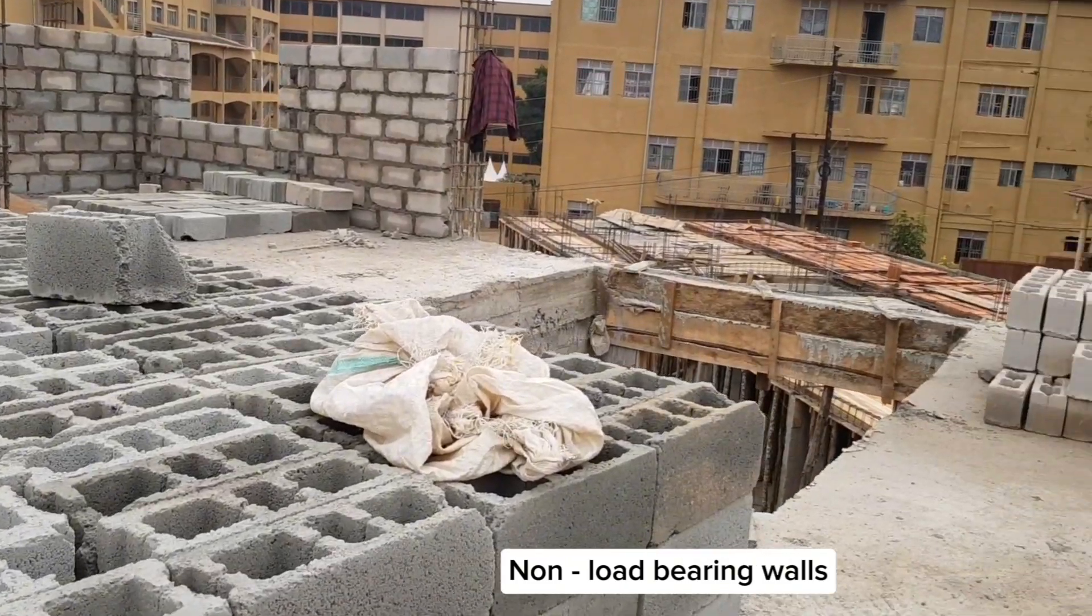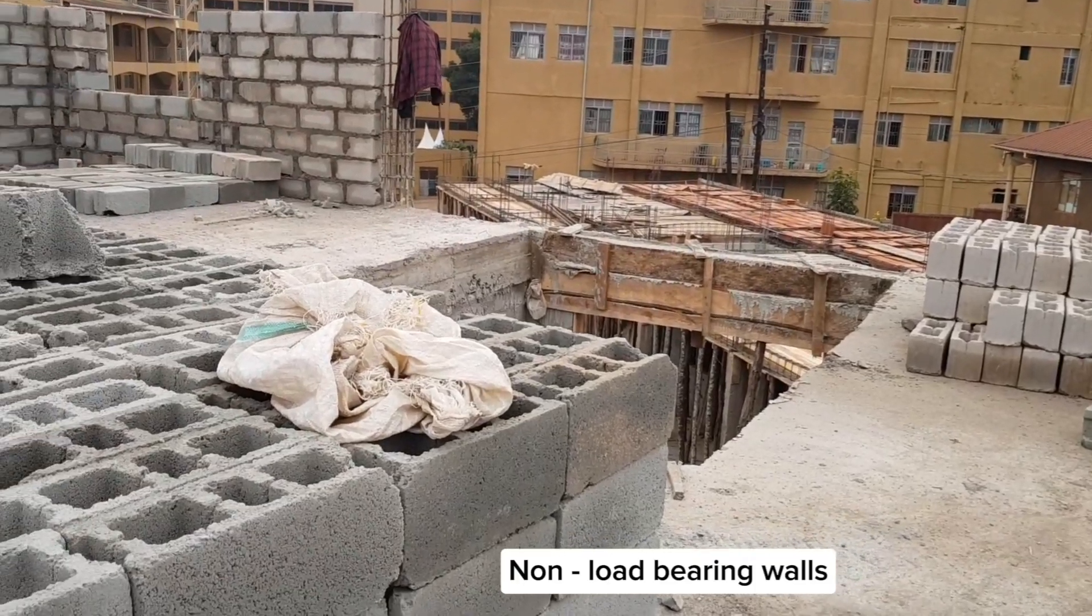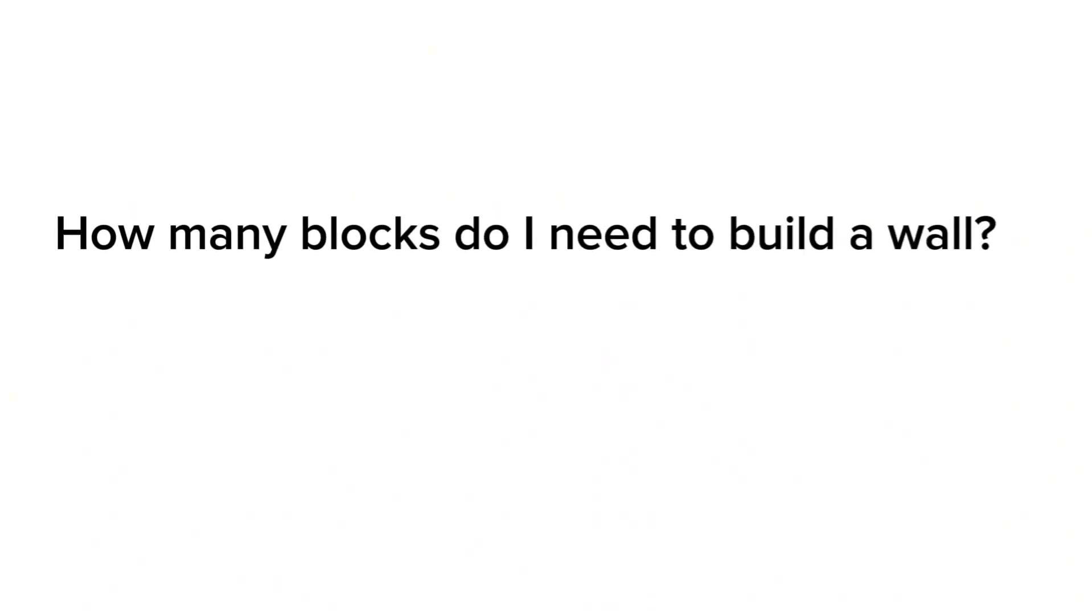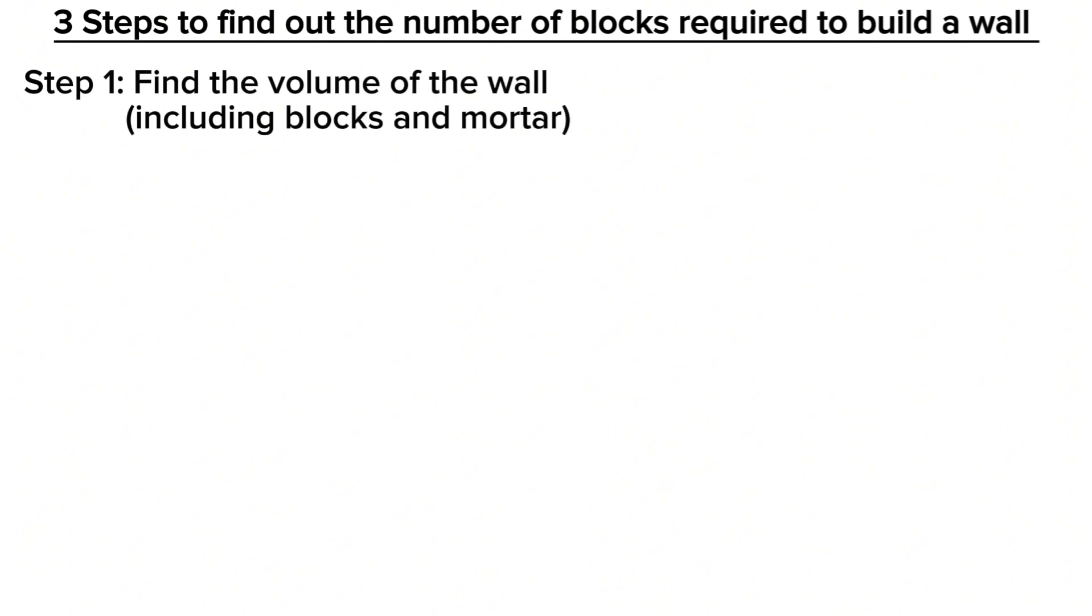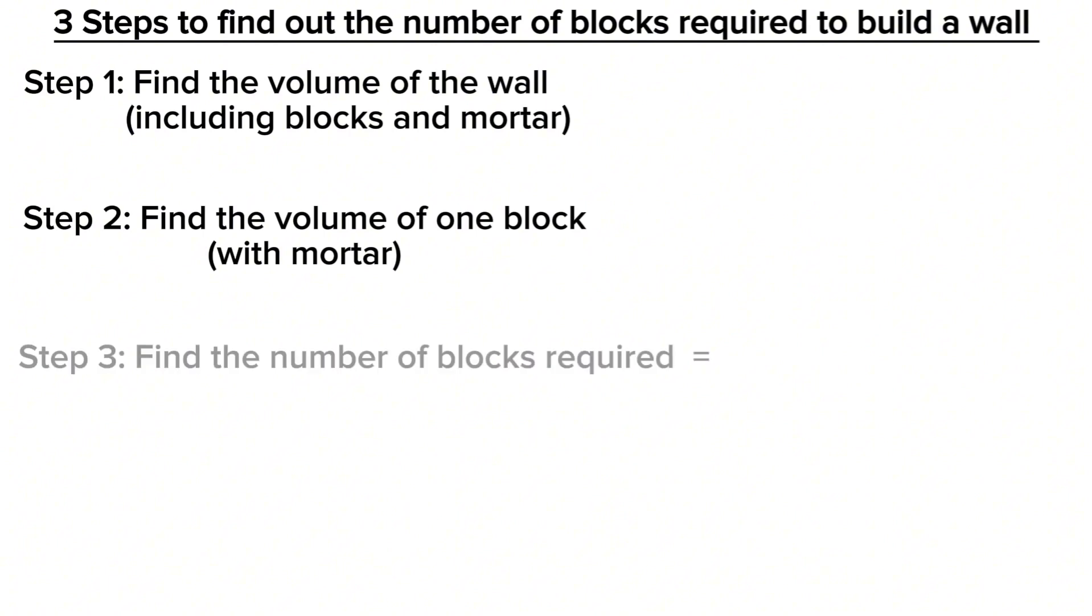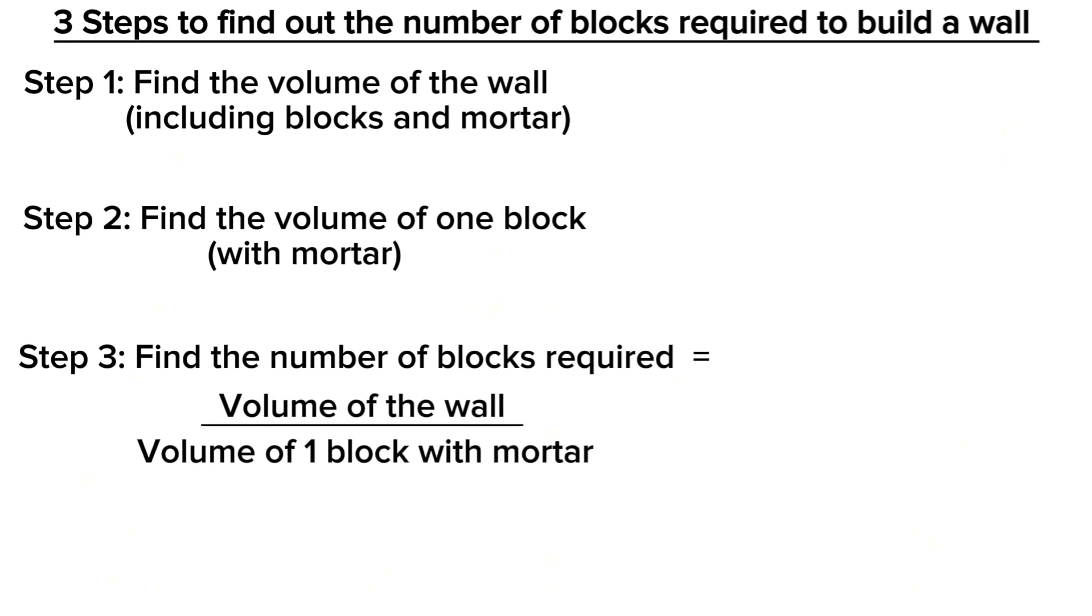need to build a wall? This can be done in three easy steps. Step one is to find the volume of the wall, including blocks and mortar. Step two is to find the volume of one block with mortar. Step three is to find the number of blocks required, which is simply the volume of the wall divided by the volume of one block with mortar.